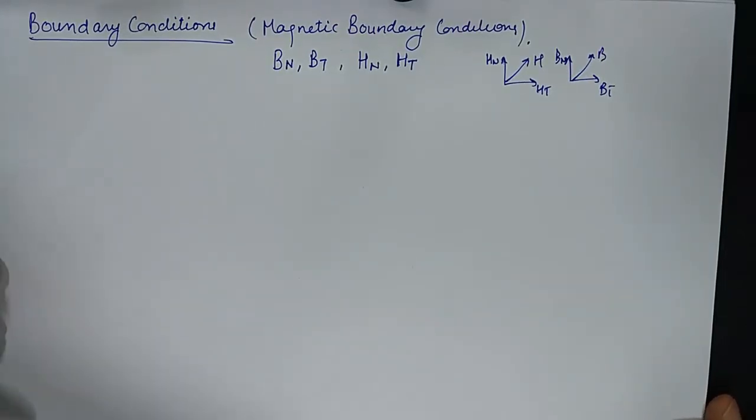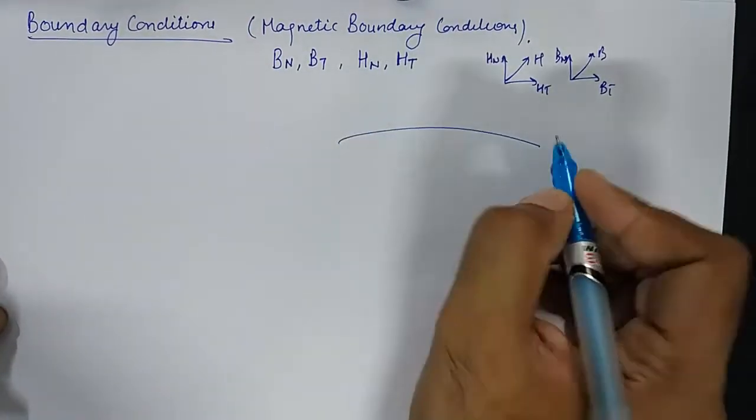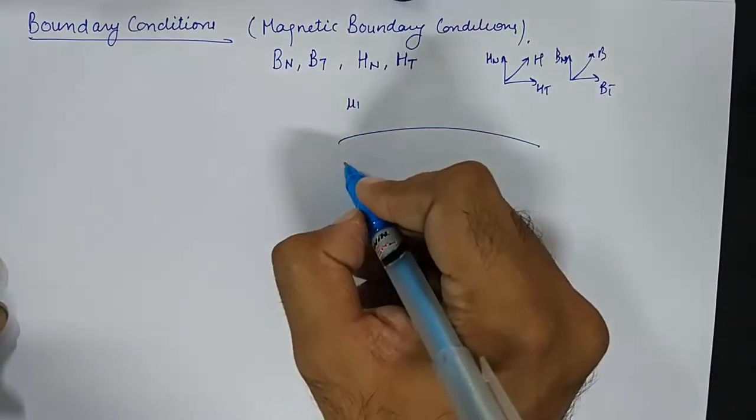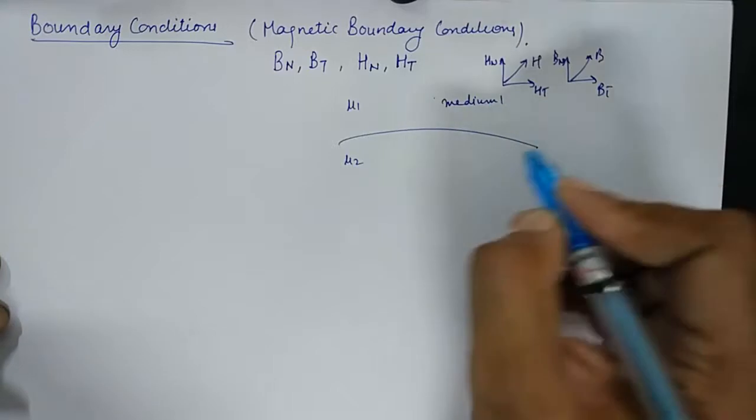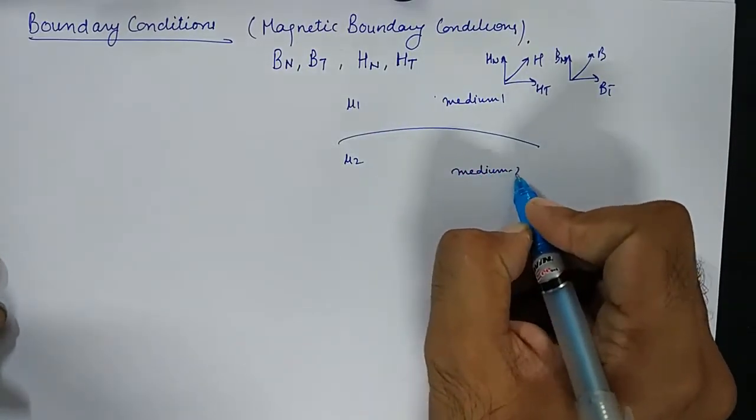Magnetic boundary conditions are again derived from Maxwell's equations. We take up the boundary with mu1, mu2. This is medium 1, medium 2.